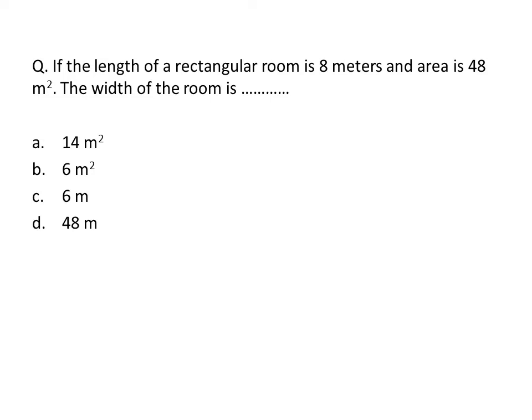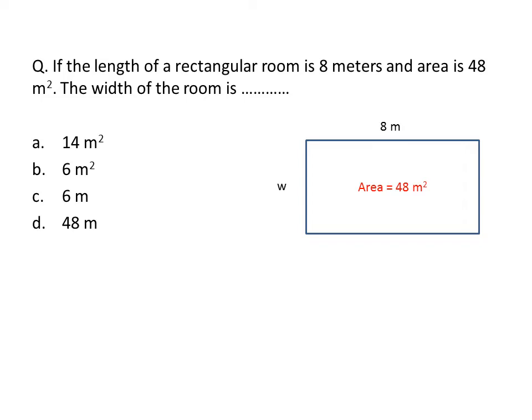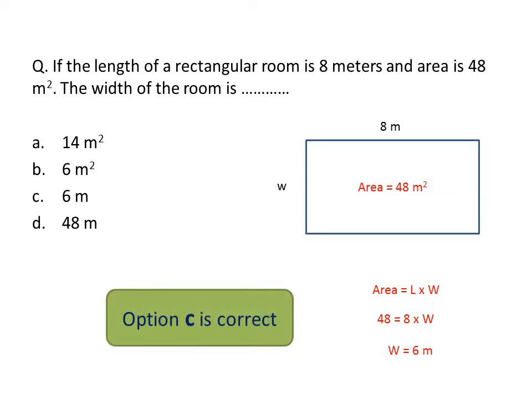Next question: if the length of a rectangular room is 8 meters and the area is 48 square meters, find the width of the room. We have length = 8 meters and area = 48 square meters. We use the area formula: area = length × width. Substituting: 48 = 8 × width. To isolate width, we divide both sides by 8: 48 divided by 8 equals 6. So width = 6 meters. Option C is correct.